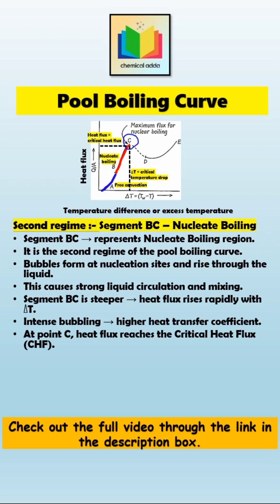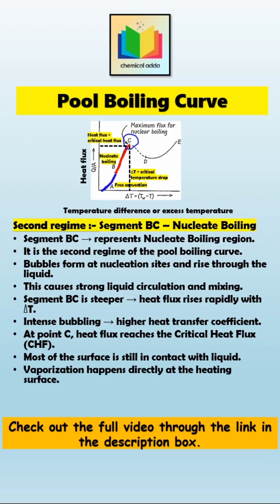Key characteristics of nucleate boiling: most of the heating surface is still in contact with the liquid, and only a small portion is covered by bubbles. Vaporization happens directly at the heating surface. As delta T increases, more nucleation sites become active, producing more bubbles and stronger agitation. In short, nucleate boiling is the most efficient and desirable boiling regime, and that's why boilers, heat exchangers, and reactors are designed to operate here.